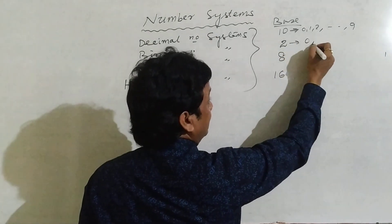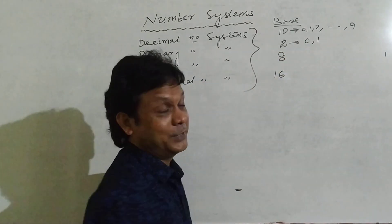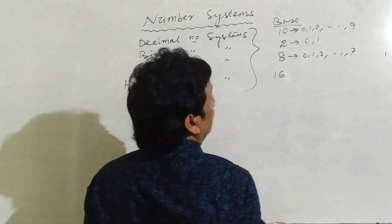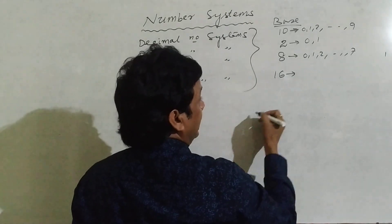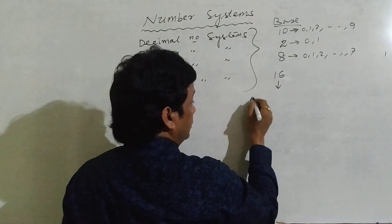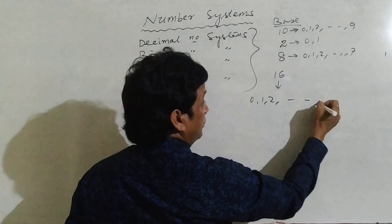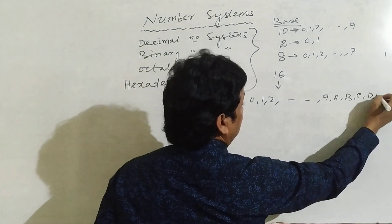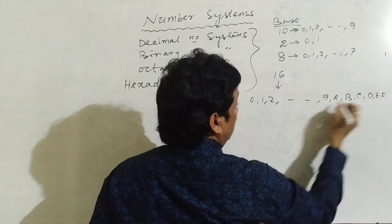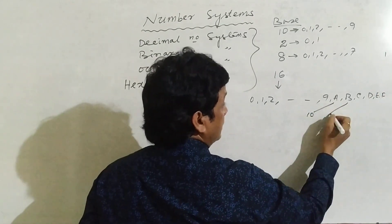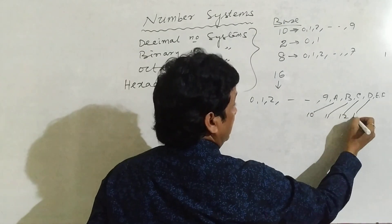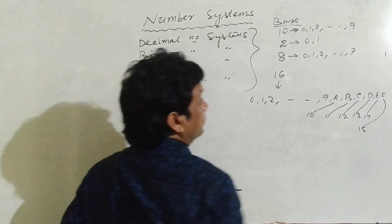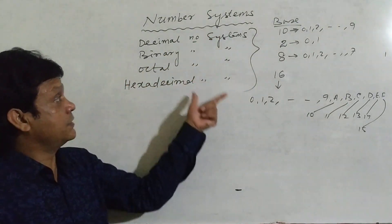In octal, the digits used are 0, 1, 2 up to 7. In hexadecimal, the digits used are 0, 1, 2 up to 9, then A, B, C, D, E, F. Here A stands for 10, B stands for 11, C stands for 12, D stands for 13, E is 14, and F is 15. These are the four number systems.